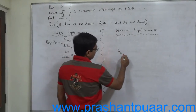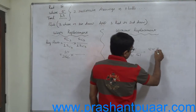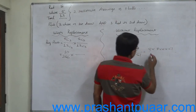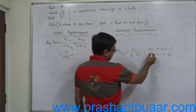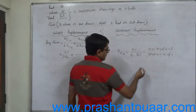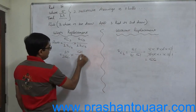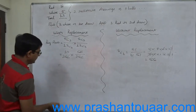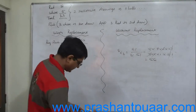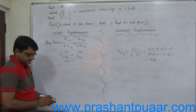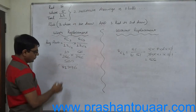8C3 equals 8 factorial upon 3 factorial into 5 factorial, that is 8 into 7 into 6 into 5 factorial divided by 3 into 2 into 1 into 5 factorial. The 5 factorial cancels; 6 and 2 cancel, giving 8 into 7 into 1 = 56. So the with-replacement answer is 10 times 56 divided by 286 squared, which simplifies to 560 divided by 286 into 286.